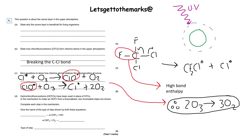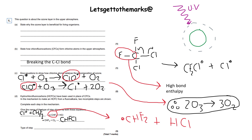Therefore, we get two ozone molecules broken down. You need to learn those equations off by heart. In this next question, we're looking for the two propagation steps. A chlorine free radical is going to steal a hydrogen from this molecule, forming HCl and leaving behind a free radical. In the second step, that free radical reacts again to reform the chlorine free radical. These are propagation reactions.